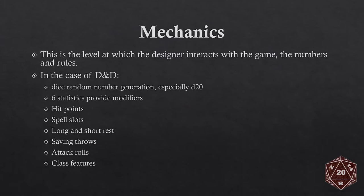The MDA framework was developed by academic researchers who wanted the ability to analyze games academically and determine what makes them what they are. It was the first attempt to officially categorize games in a way that allows us to understand why players enjoy them. The framework looks at the mechanics, the dynamics, and the aesthetics. Mechanics are the numbers and rules — in D&D these include dice rolls, ability scores like strength, constitution, dexterity, intelligence, wisdom, and charisma, hit points, spell slots, rests, saving throws, attack rolls, and class features.